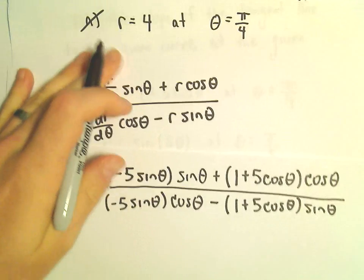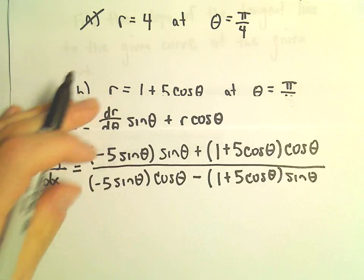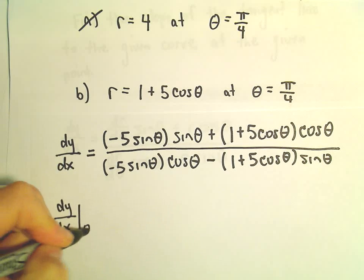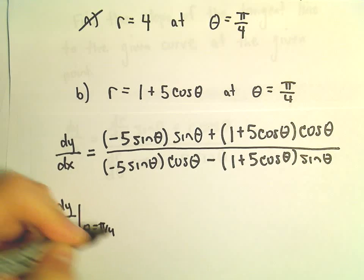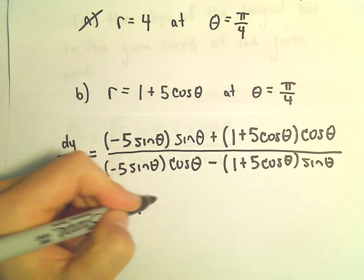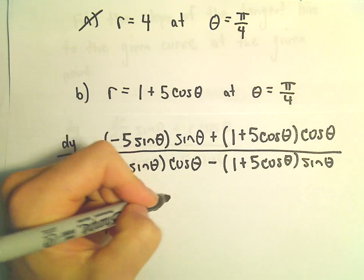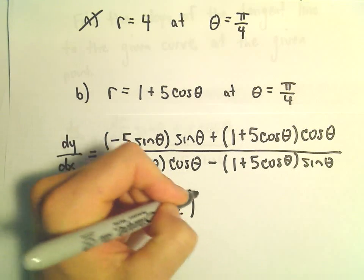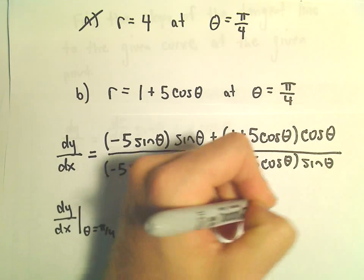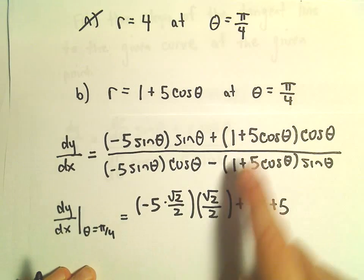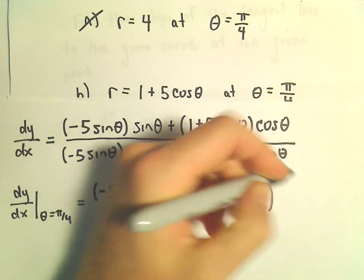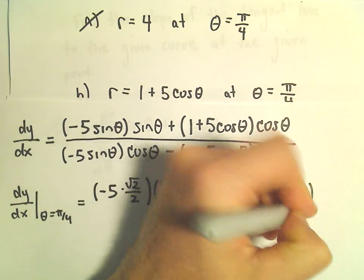We evaluate this at theta equals pi over 4, plugging in pi over 4 everywhere. Sine of pi over 4 is square root of 2 over 2, and we have another sine theta giving another square root of 2 over 2. Plus, we have 1 plus 5 times cosine of pi over 4, which is square root of 2 over 2. Cosine of pi over 4 is also square root of 2 over 2.